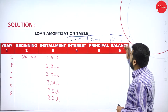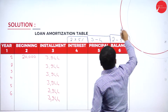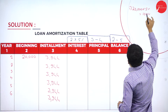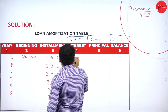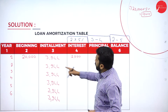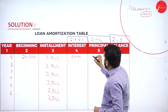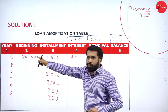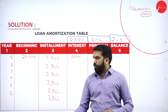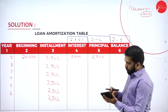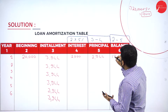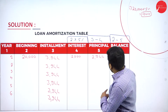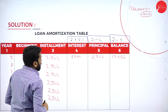Year 1 calculation: interest on 20,000 at 5% = 1,000. Principal = column 3 minus column 4 = 3,944 minus 1,000 = 2,944. Balance = column 2 minus column 5 = 20,000 minus 2,944 = 17,056. So 17,056 carries forward as the beginning balance for year 2.